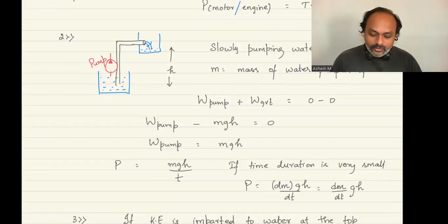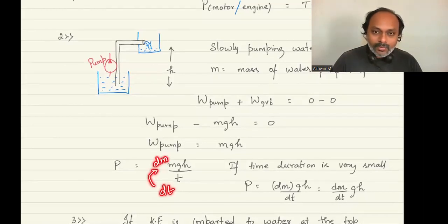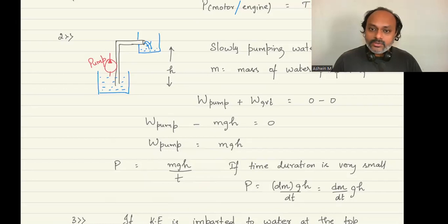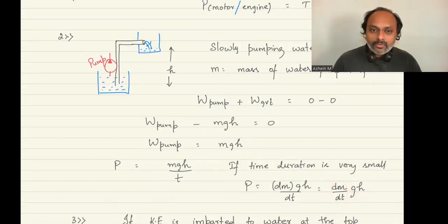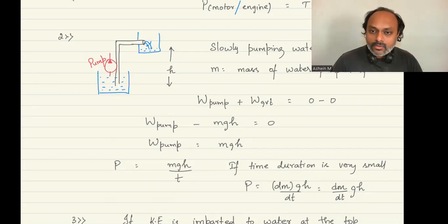This equation can be modified for a very small time dt. In time dt, let dm mass be pumped up. Then power becomes dm·g·h divided by dt, which we write as dm/dt times g times h. This dm/dt is the mass transfer rate — mass per unit time of water being pumped up, also called mass flow rate, in units of kilograms per second or kilograms per minute.